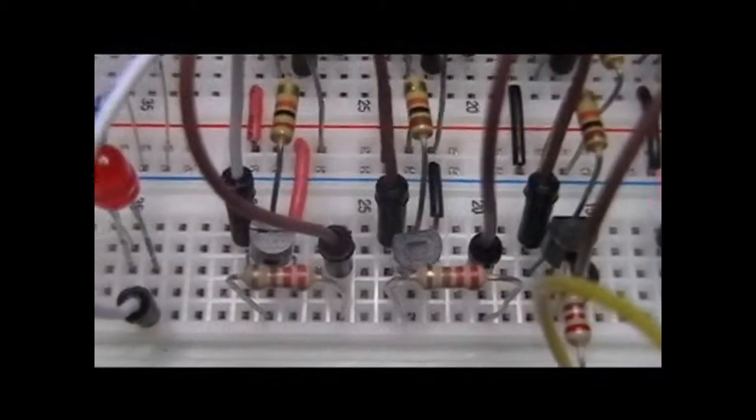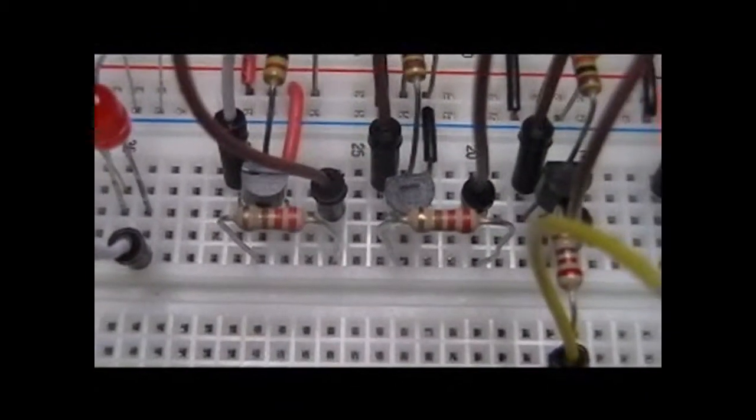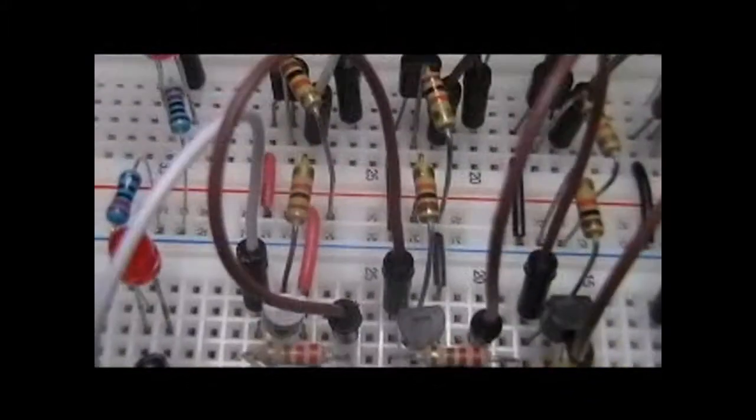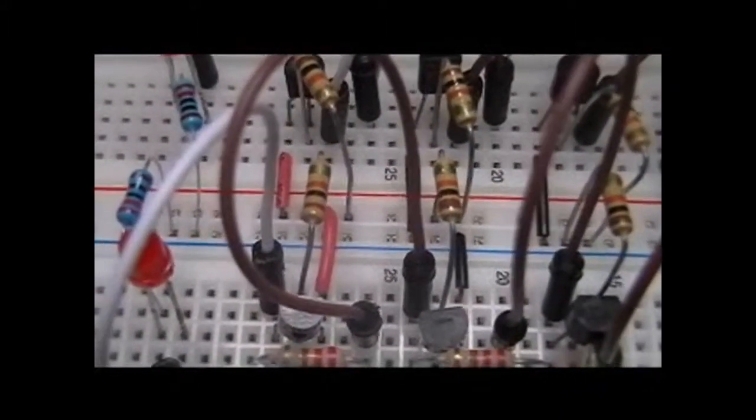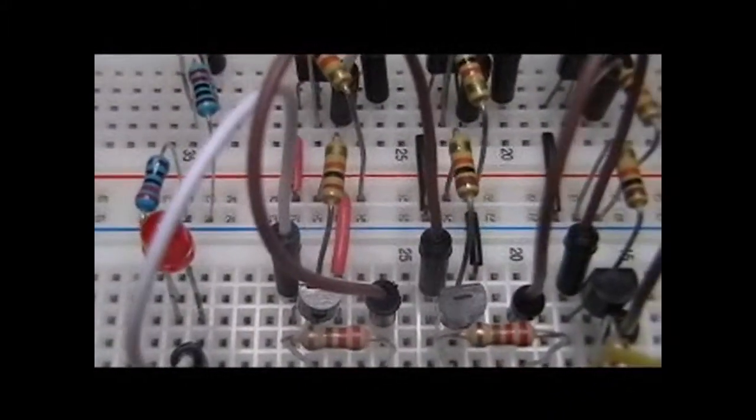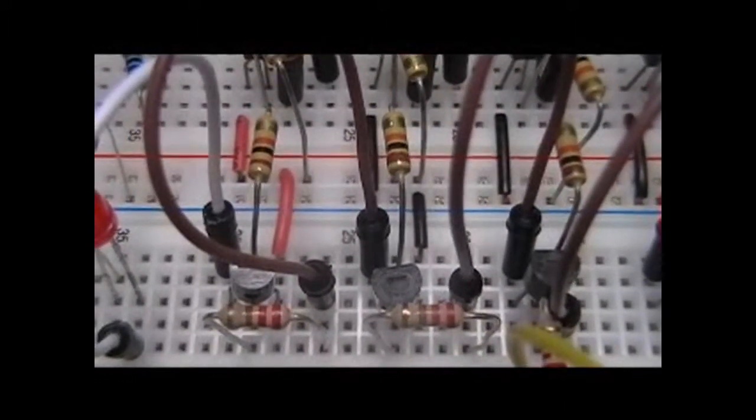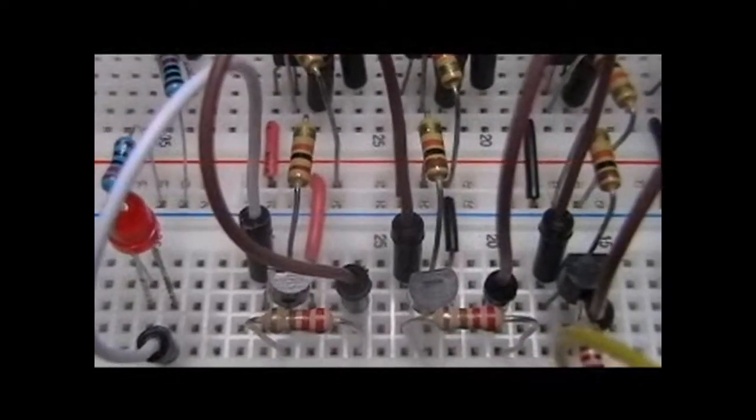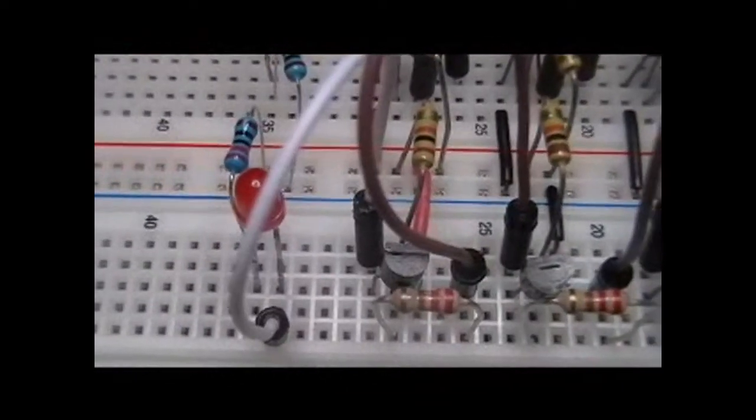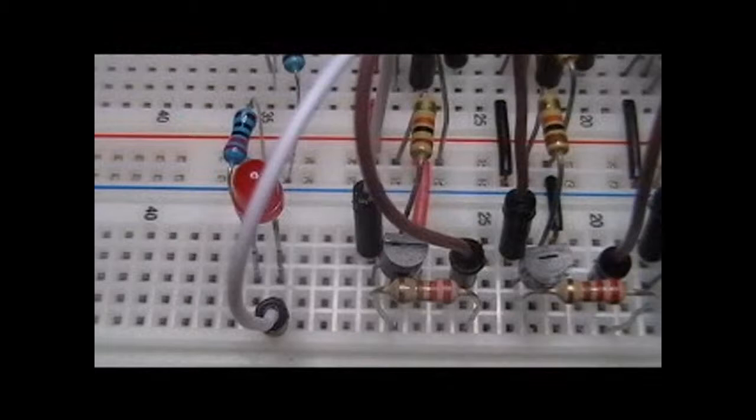And then finally you'll notice it has a very similar setup, has the 220 ohm resistor in, has the 10k ohm, in this case though, to the positive rail, has a connection off the emitter to base, and then the collector into our final staging transistor, which I've talked about before.